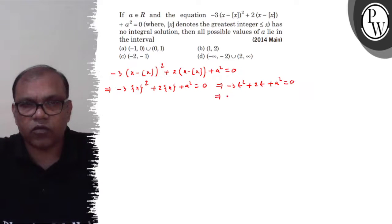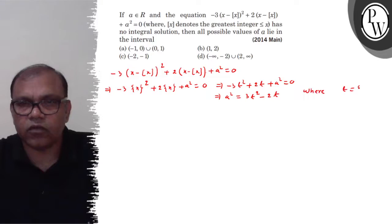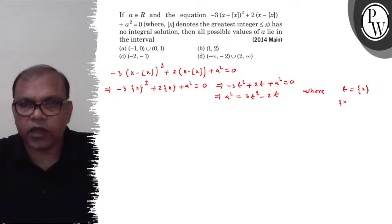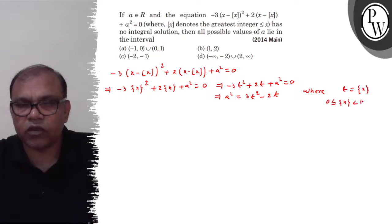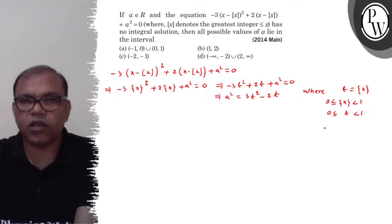इसको ऐसा लिखो: a² equals 3t² minus 2t, where t equals fractional x. आपको पता है कि fractional x की minimum value होती है 0 और maximum value होती है 1. 1 के equal नहीं होता, 1 से छोटा रहता है। तो जो t की value होगी, वो हमेशा 0 और 1 के बीच में ही होगी।